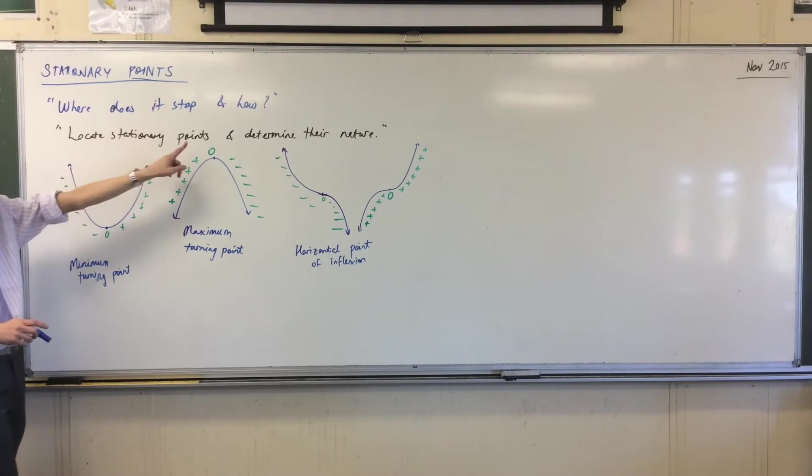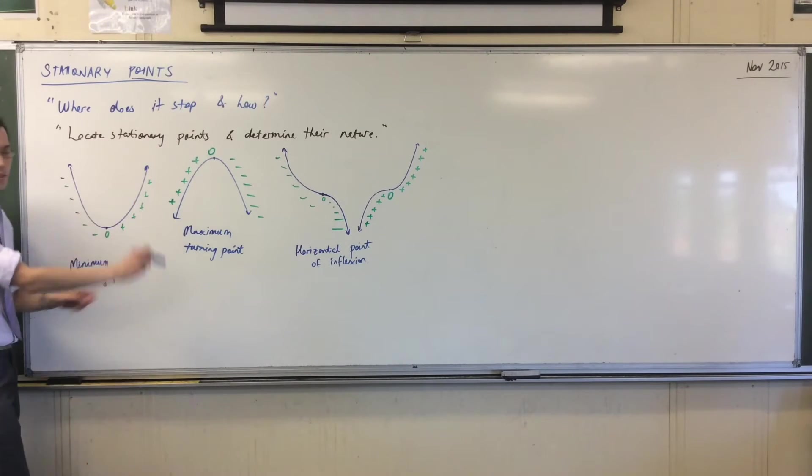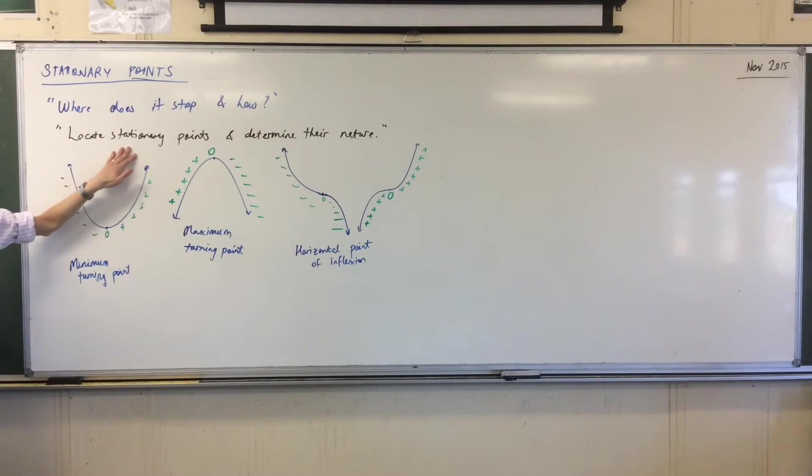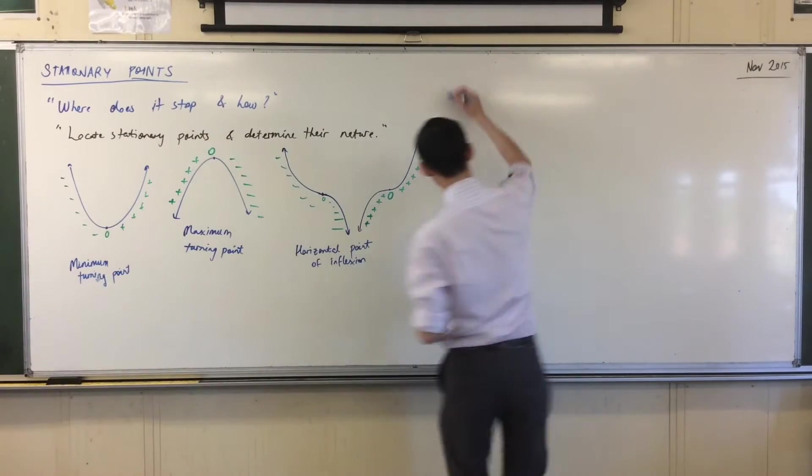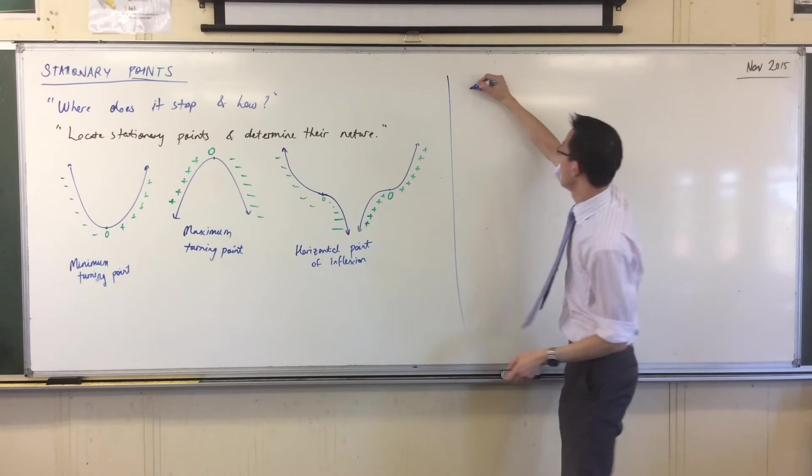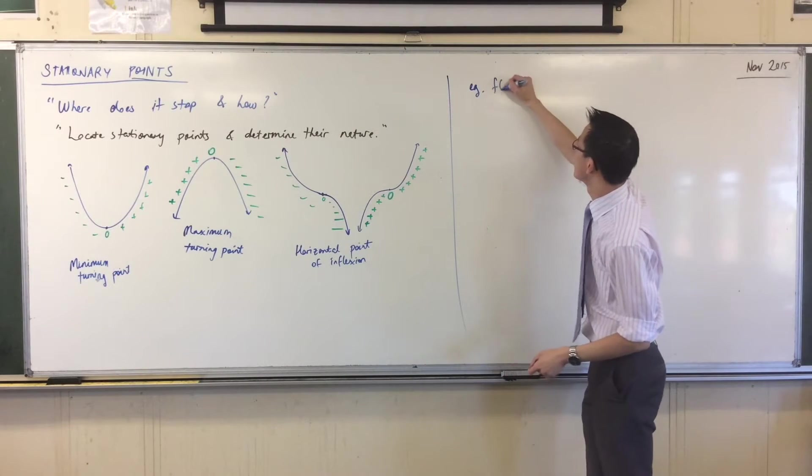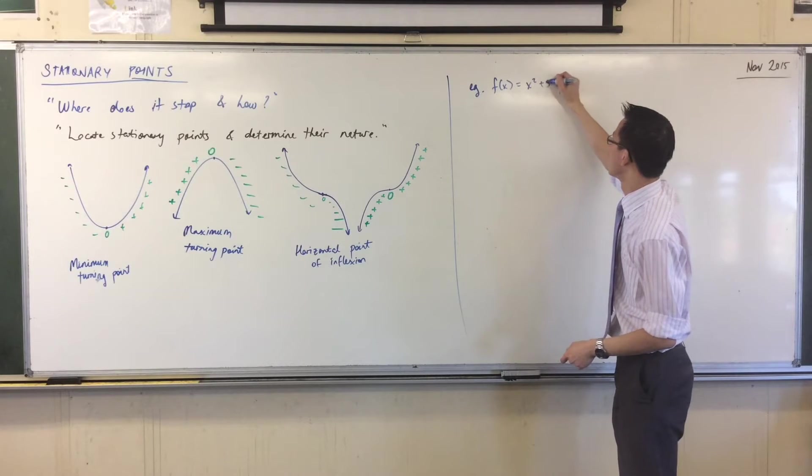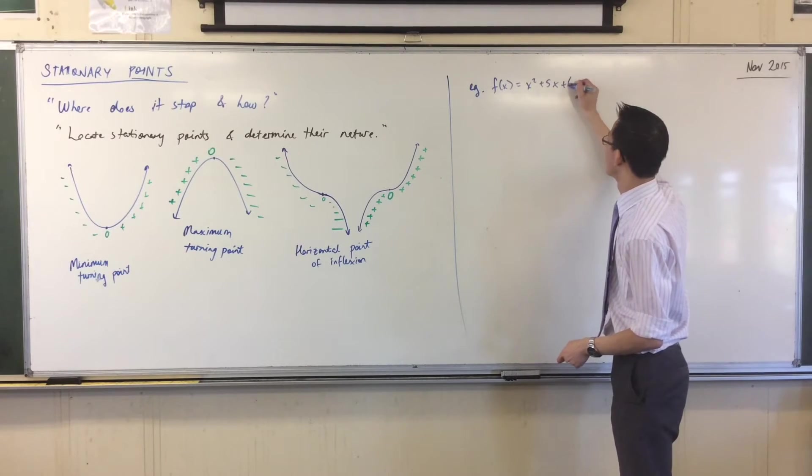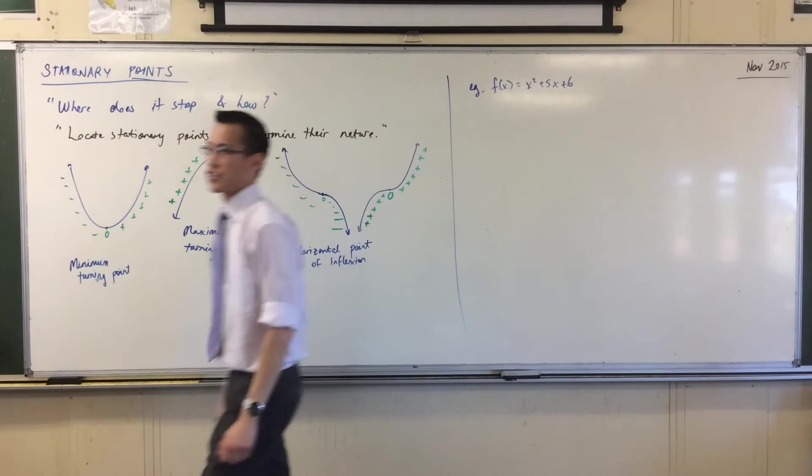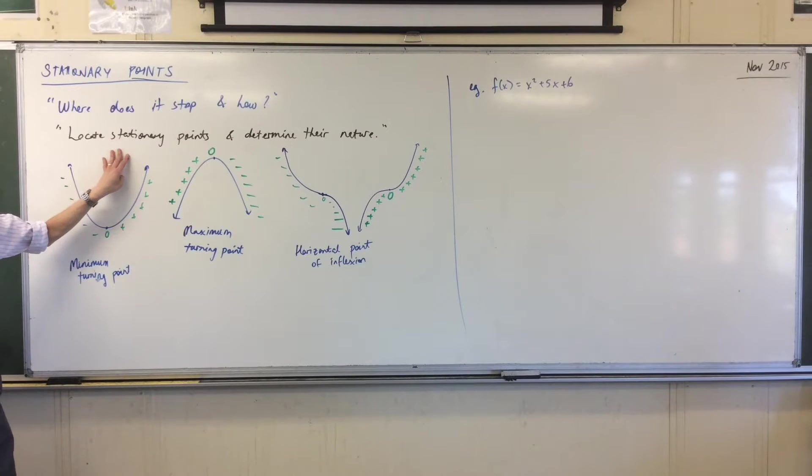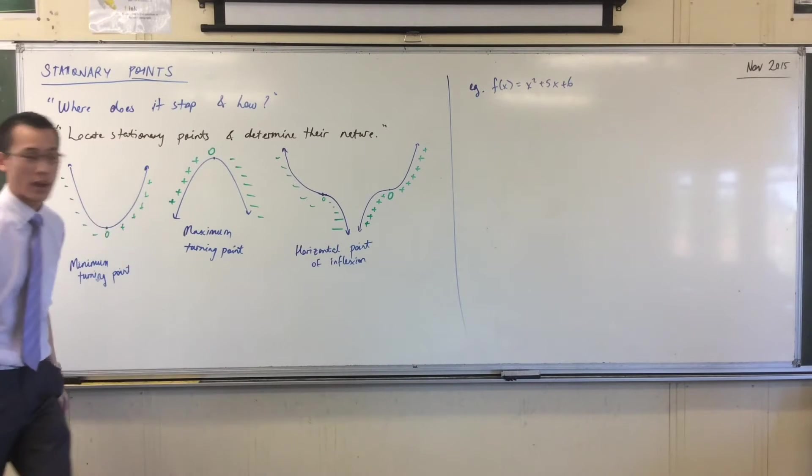Remember I said this is a double-barreling question, right? Locate the stationary points and then determine their nature. Locate, you've already been doing this. If I gave you a function, let's do this right now. We're just going to choose this example because it's so easy and you can do it without thinking.